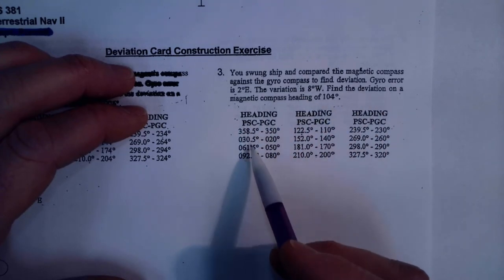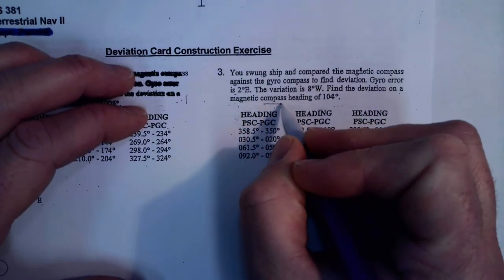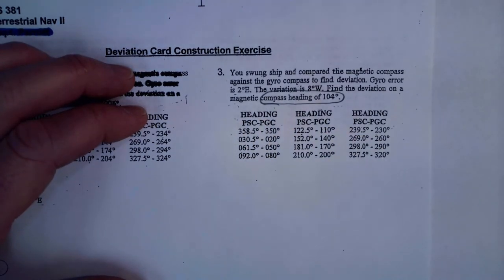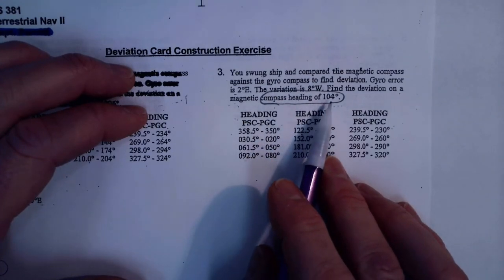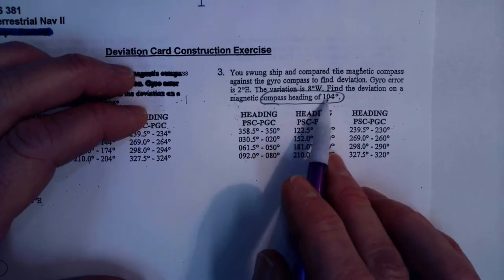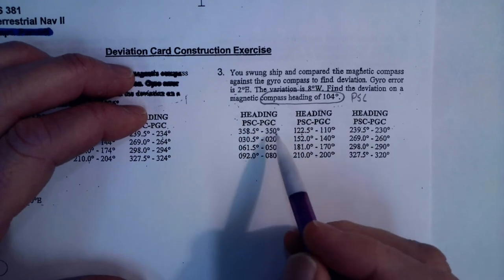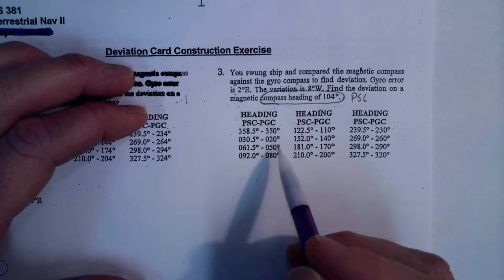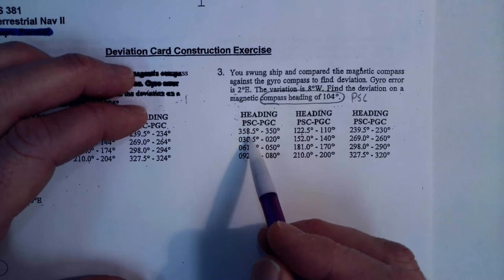We're going to be asked to find deviation of the magnetic compass when given something. This first problem is when we're given a compass heading of 104. Before you start any of these, you want to understand what value they're giving you before you can enter the table. This is a compass heading — PSC — so when I go into this table I'm looking for pairs that bracket 104 PSC.